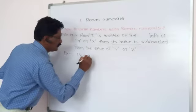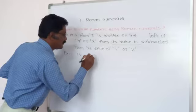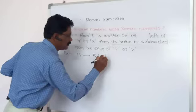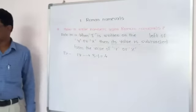IV means V minus I, means 5 minus 1, that is 4.